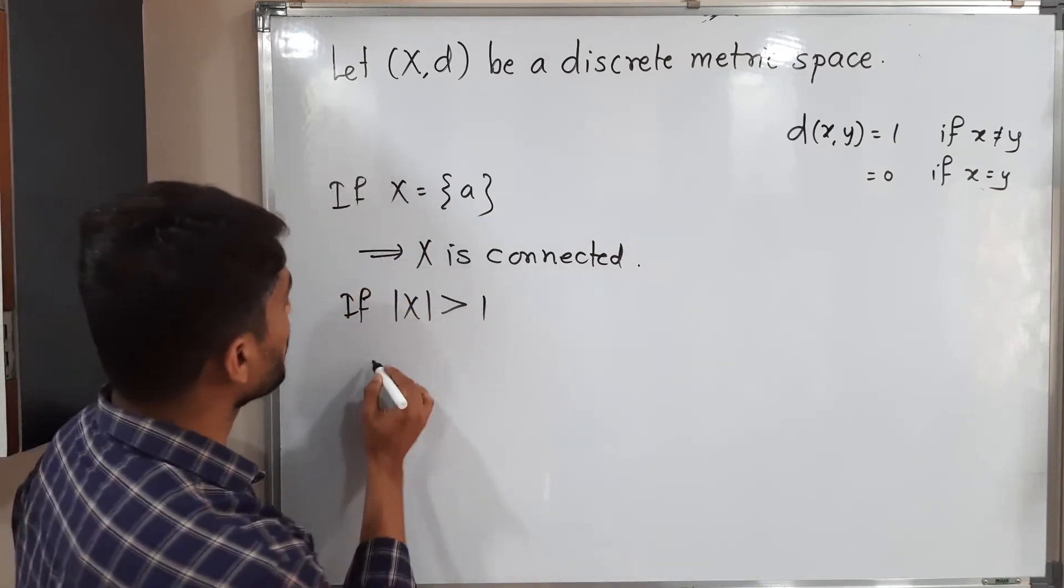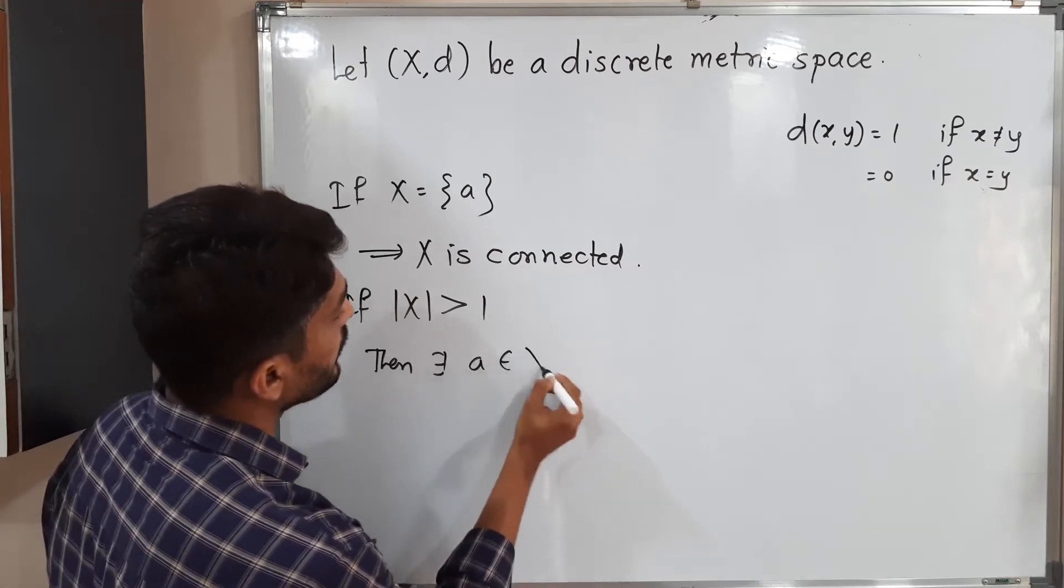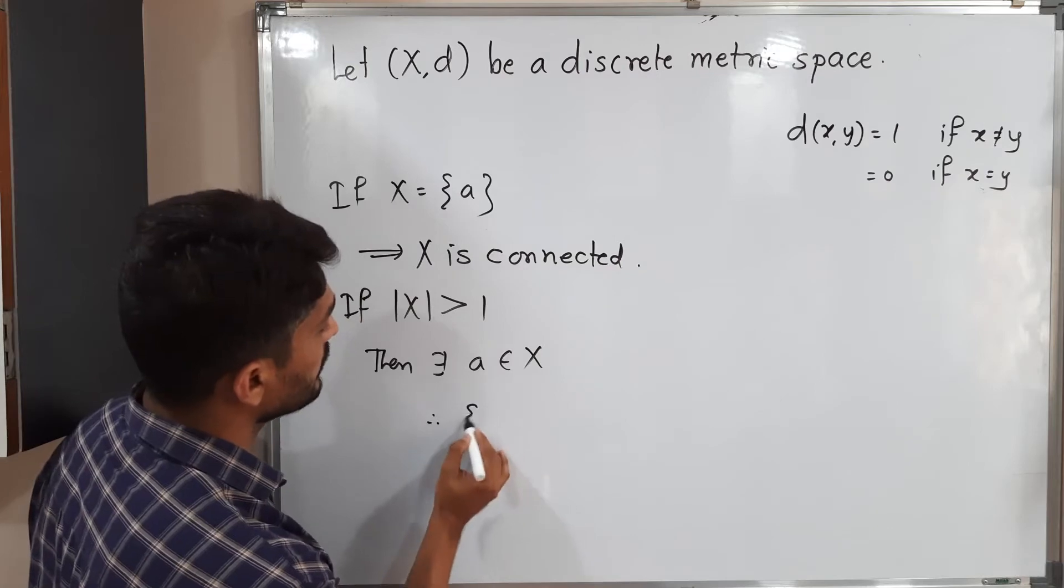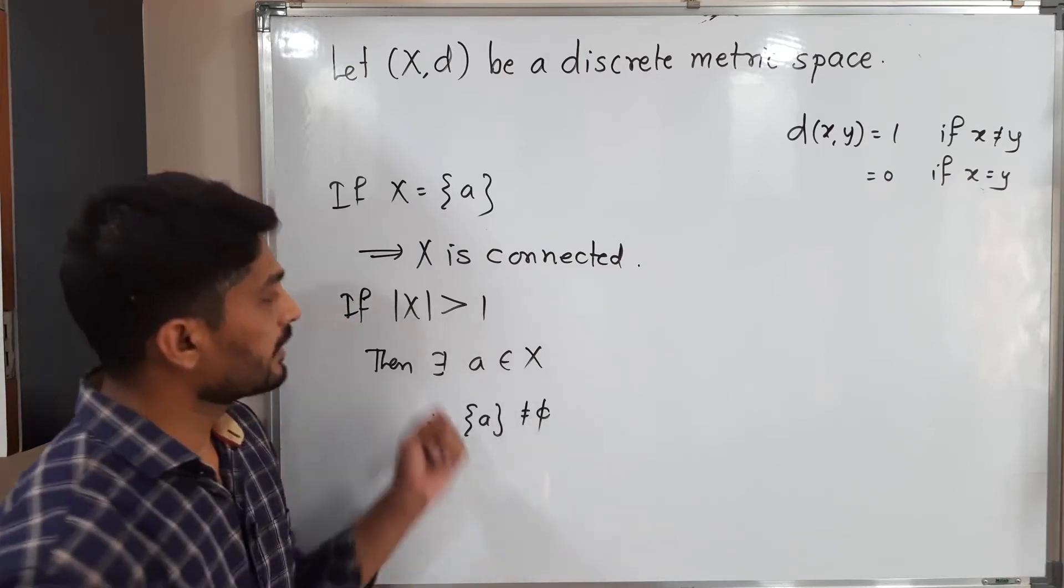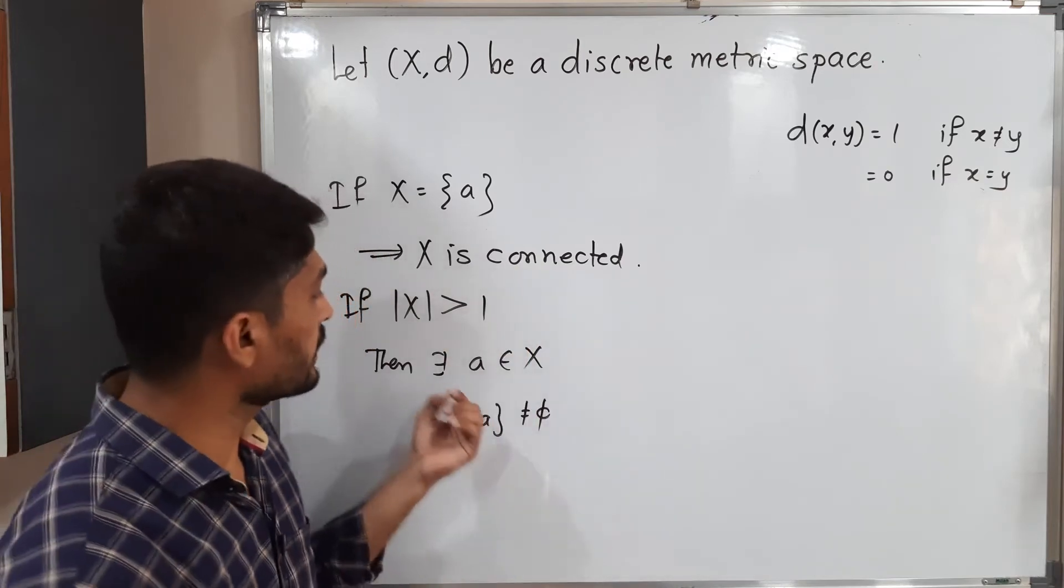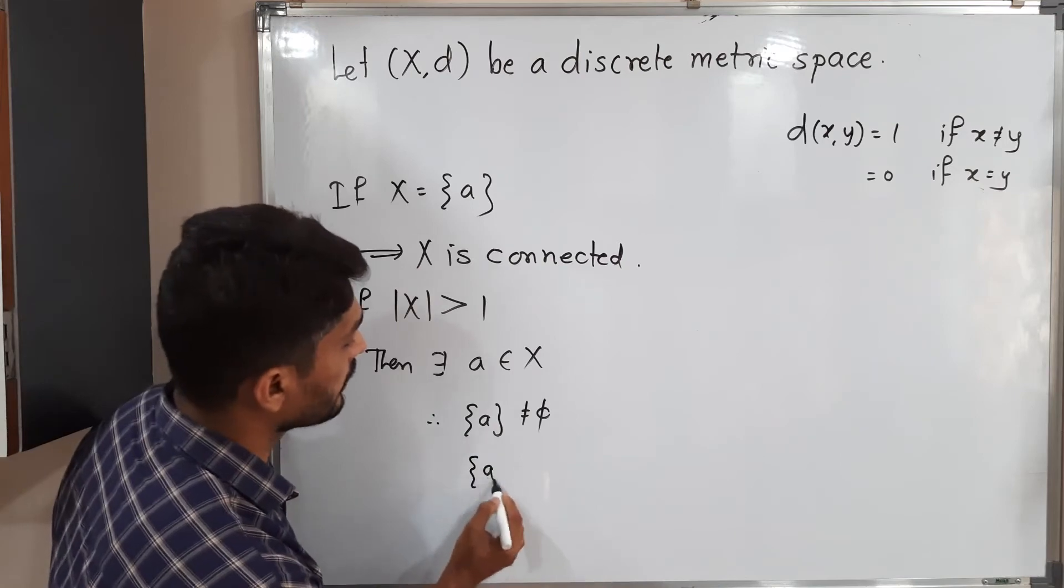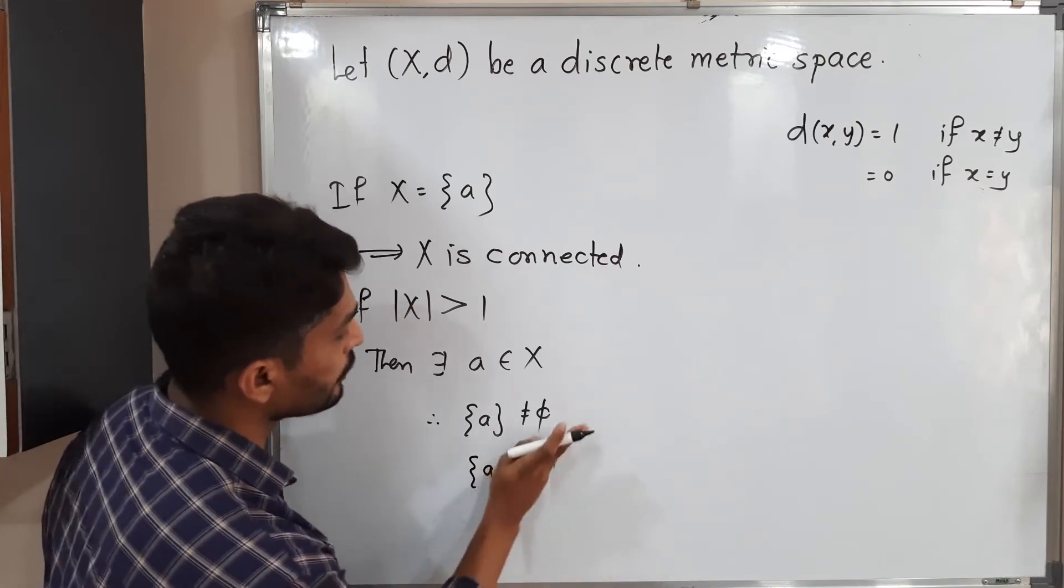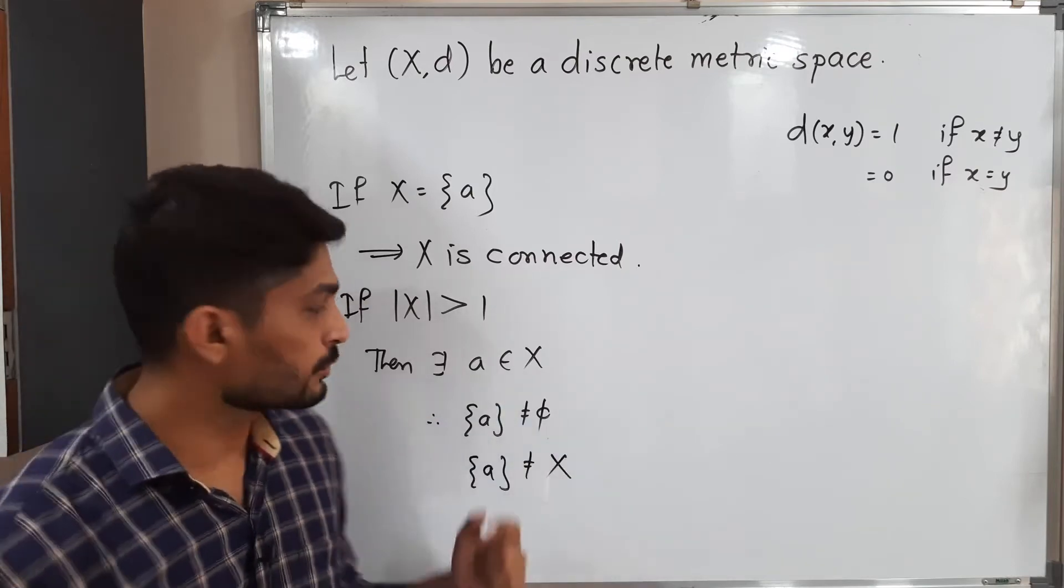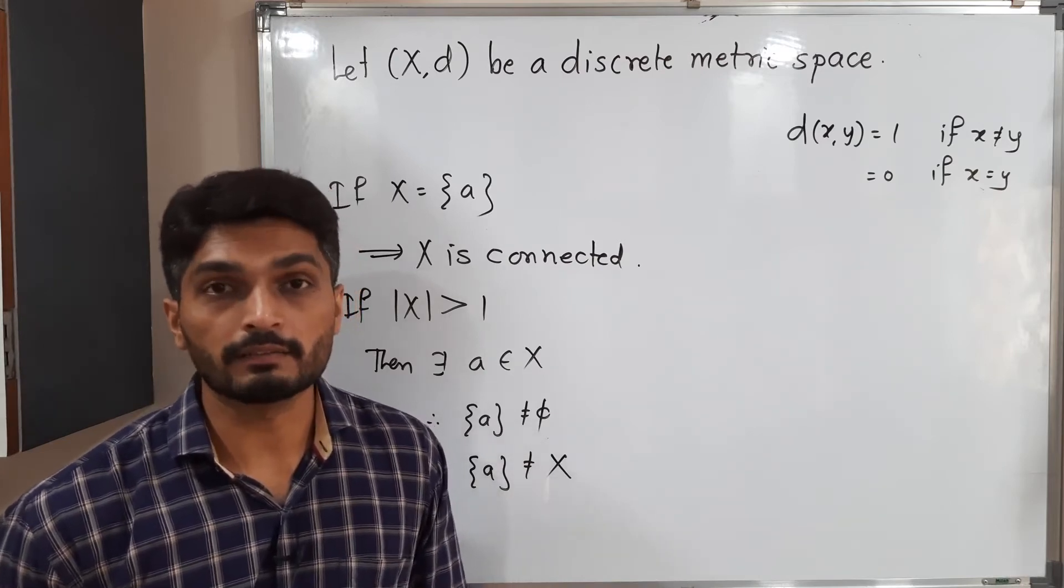If X contains more than one element, then we can find some point a belonging to X. I am calling it a. So singleton {a} is not equal to X, because X has more than one element. This set has only one element, so both of them are distinct, both of them are unequal.